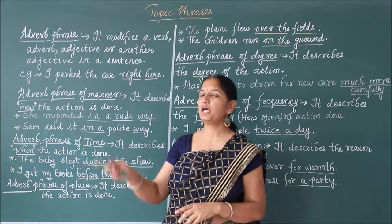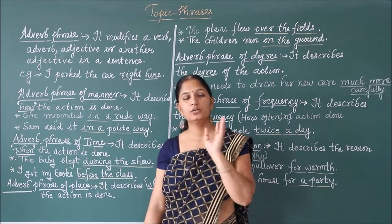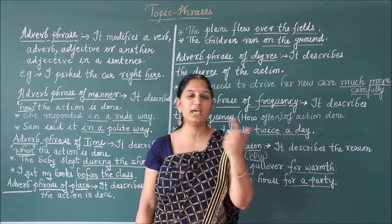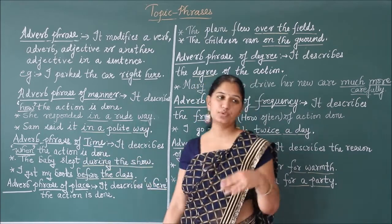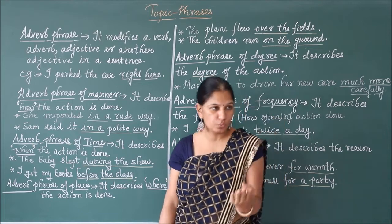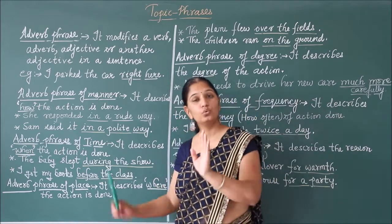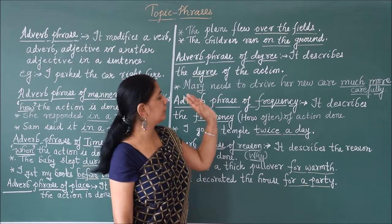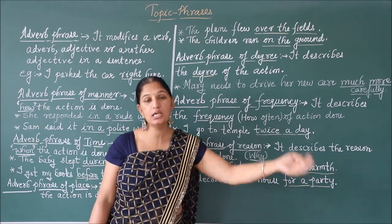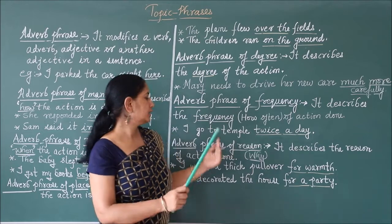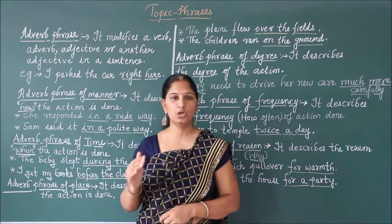Then we have adverb phrases, which answer the questions of why, how, where, when, for what reason, and the frequency of the action. We have seen many kinds: adverb phrase of manner — how the action is done; adverb phrase of time — when the action is done; adverb phrase of place — where the action is done; adverb phrase of degree — the degree of the action; adverb phrase of frequency — how often the action is happening; and adverb phrase of reason — what is the reason of the action done. This was all about the phrases.